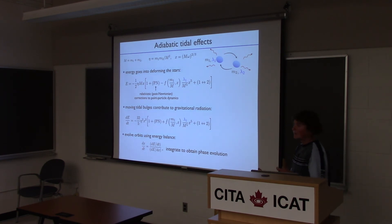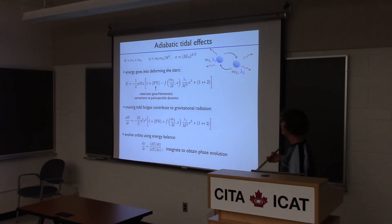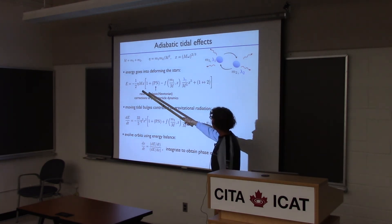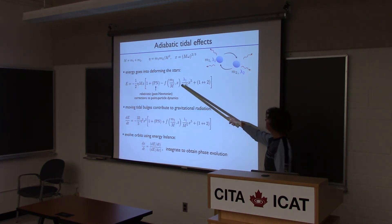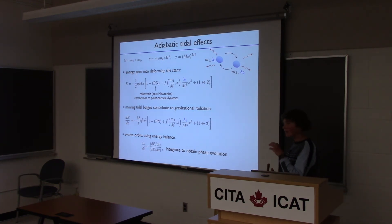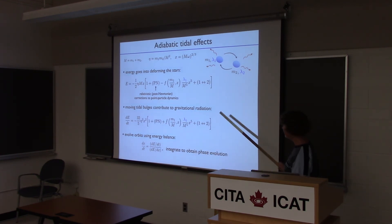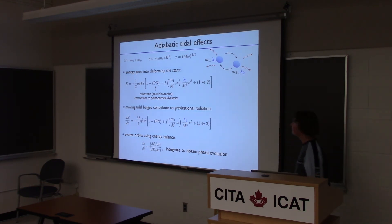How does this parameter enter into the waveform? There are two kinds of effects. First, for the conservative part, some energy will be required to deform the stars, so there is a correction to the energy of the system — the Newtonian orbital energy, post-Newtonian corrections, and a term that depends on the tidal deformability. Second, the quadrupole from the star is now phase-coherent with the orbital quadrupole, so there is enhanced emission of gravitational radiation, and again this is proportional to the tidal deformability.